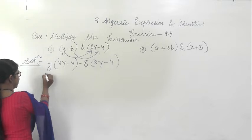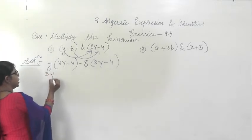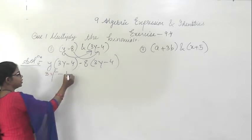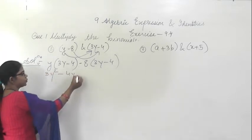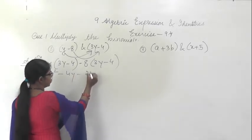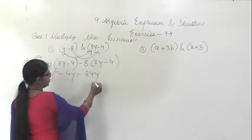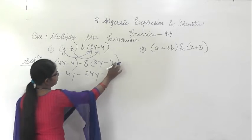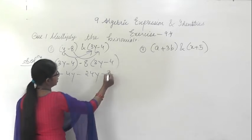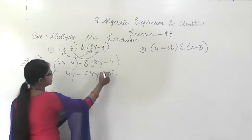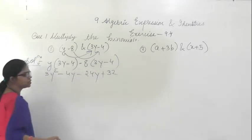So y into (3y minus 4) minus 8 into (3y minus 4). Multiply inside: 3 into y into y is 3y squared minus 4y. Then you will get minus 24y, and minus 8 into minus 4 is plus 32.